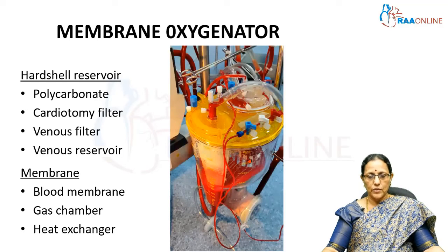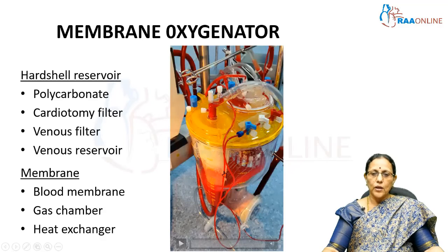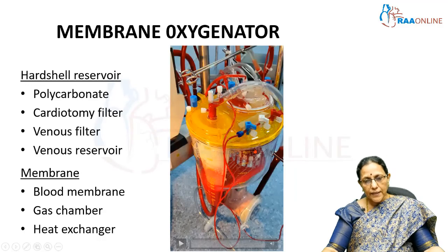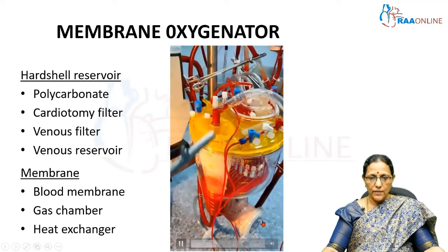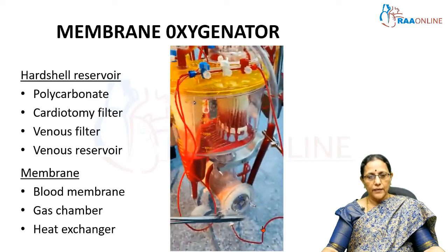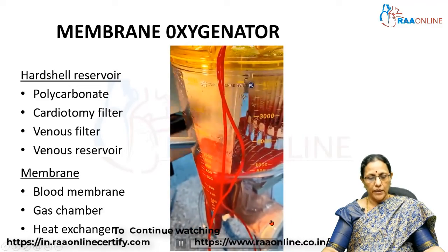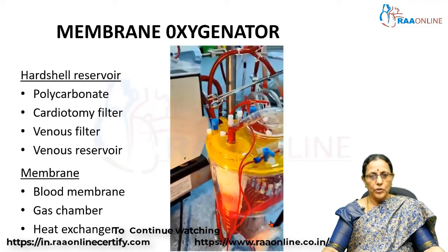The current membrane oxygenator has a hard shell reservoir and a membrane portion. The venous reservoir is made up of hard shell polycarbonate material, making it easily visible and sturdy. Inside the venous reservoir there are two types of filters — the venous filter and the cardiotomy filter. It is into the cardiotomy filter that the cardiotomy and venous suction drain. The membrane itself has three portions: the blood column, the gas column, and an integral heat exchanger. Gas enters and oxygenates the blood, and the heat exchanger inside the membrane either cools or warms the patient during cardiac surgery.